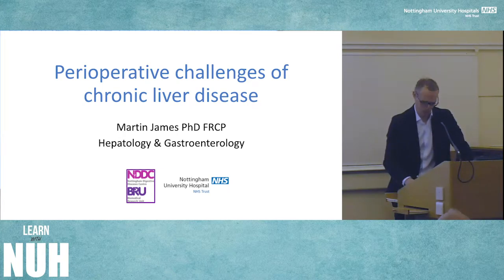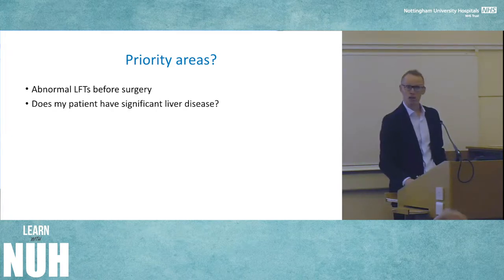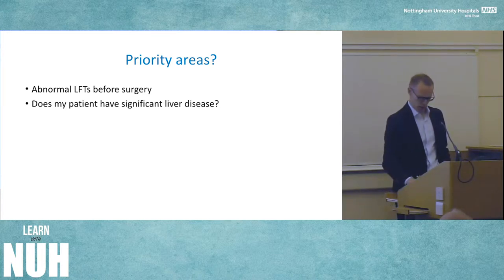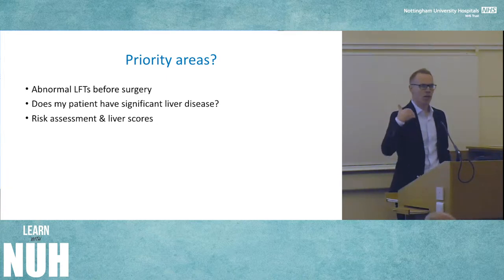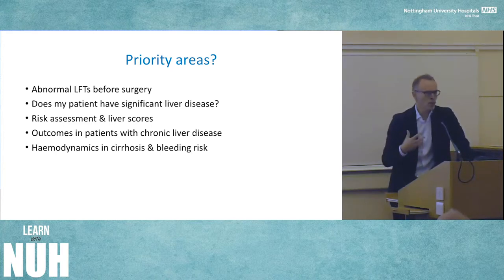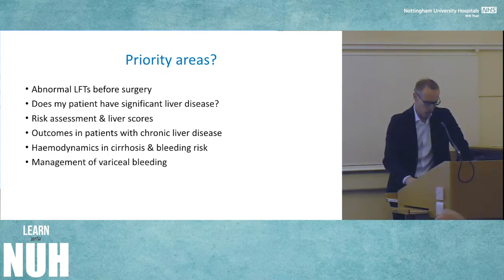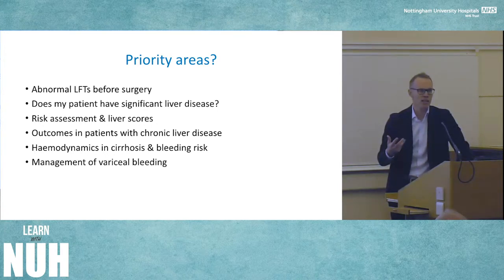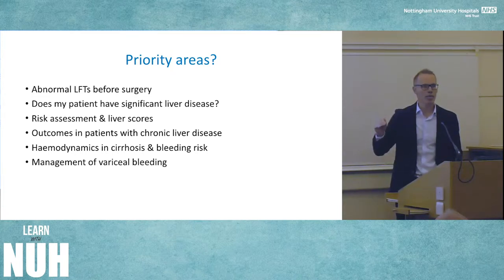So what are the priority areas? Having talked to a close colleague, the things you might want to know about: abnormal LFTs before surgery, whether your patient has significant liver disease and how that might impact on your preparation and type of anaesthetic. What about risk assessment and liver scores — what do they mean? How can you tell whether a patient with cirrhosis is going to run into problems with coagulopathy and bleeding or liver failure following surgery? What about changes in haemodynamics in cirrhosis, bleeding risk, and how we manage patients with acute variceal haemorrhage in the emergency setting?